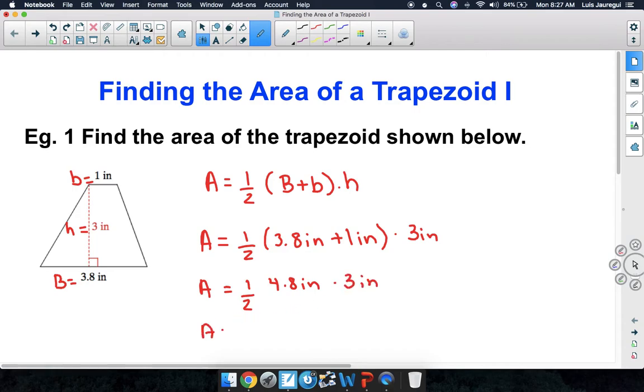Now, half of 4.8 is 2.4, so we're going to have 2.4 inches times 3 inches, and once we multiply the 2.4 by the 3, we're going to get 7.2, and inches times inches becomes inches squared.